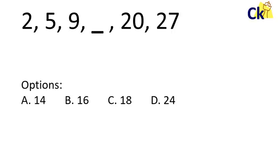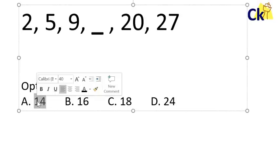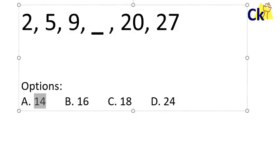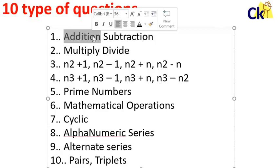So 2, 5, 9, 20, 27. Can you please pause and try to solve this question. Now 2 plus 3 is 5. 5 plus 4 is 9. 9 plus 5 should be 14. Then 14 plus 6 is 20, 20 plus 7 is 27. So this is a very basic example of first type addition subtraction.